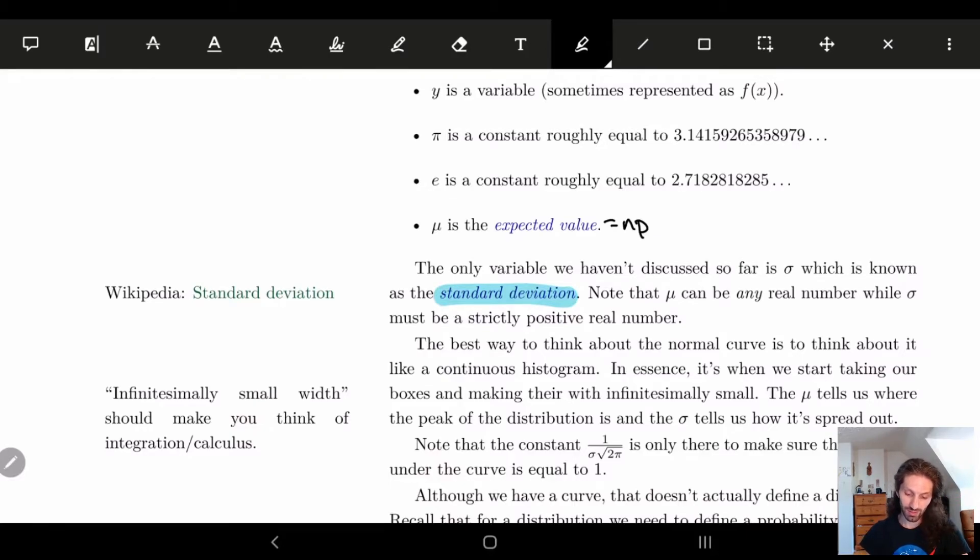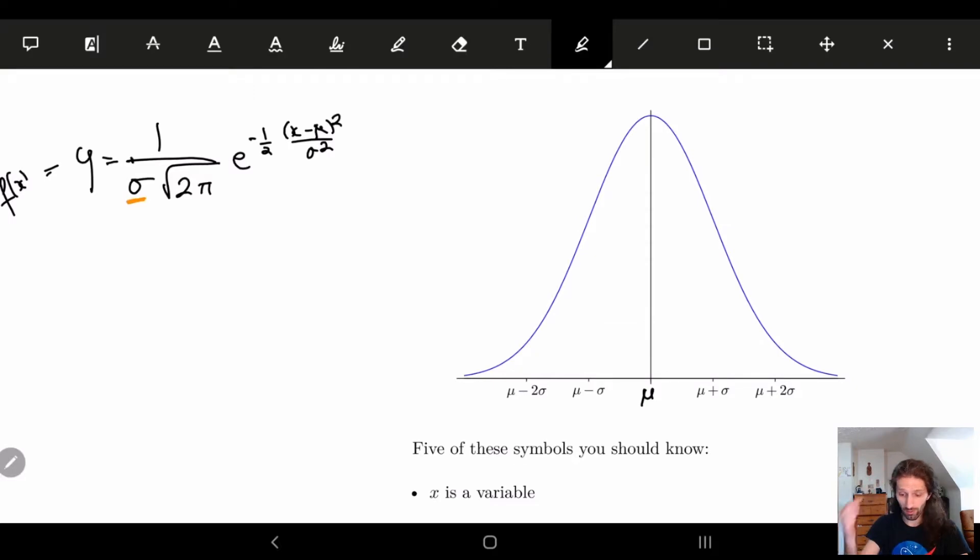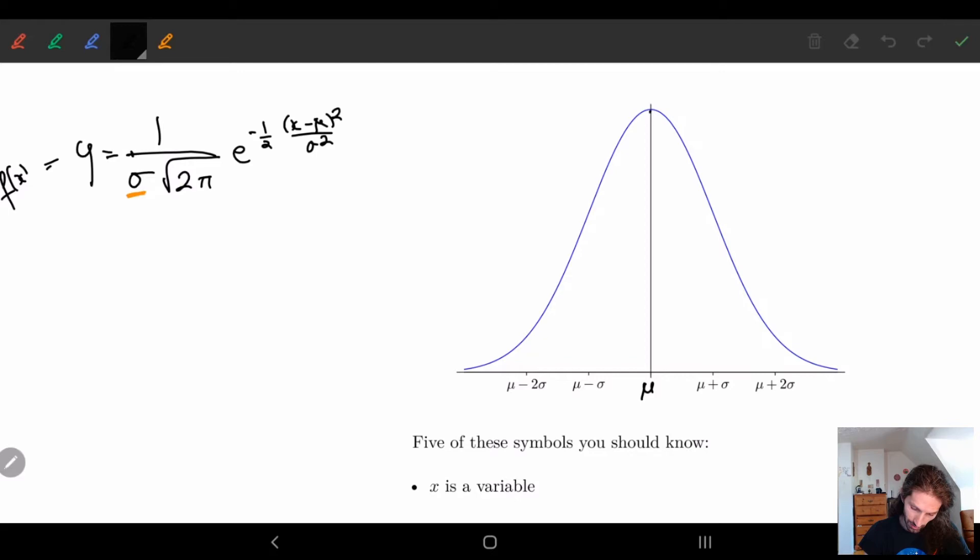So the way to kind of think about the standard deviation is if you look at your bell curve, it's going to be centered around some number mu, which is your expected value. And you can kind of see this expected value is going to be peaking, the top of the peak. And then this standard deviation is basically going to give you some distance away from mu that's the same. So this distance here is the same as this distance here. This distance here is identical.